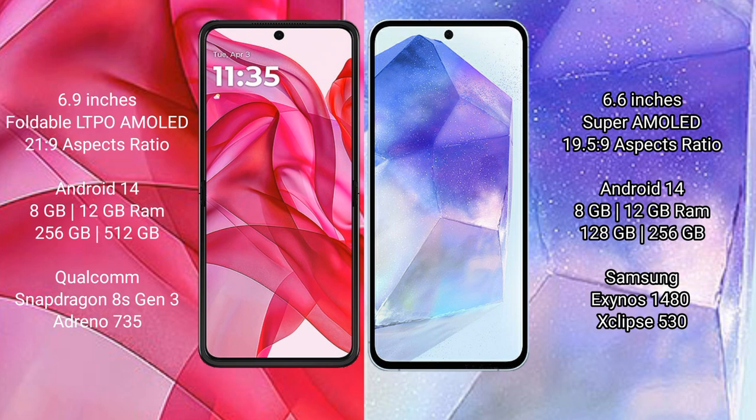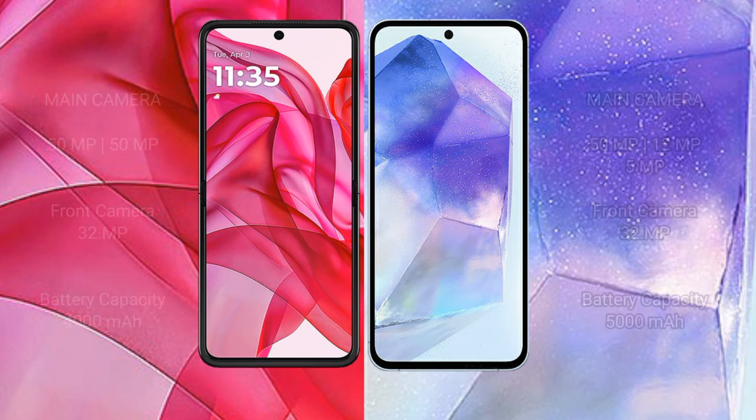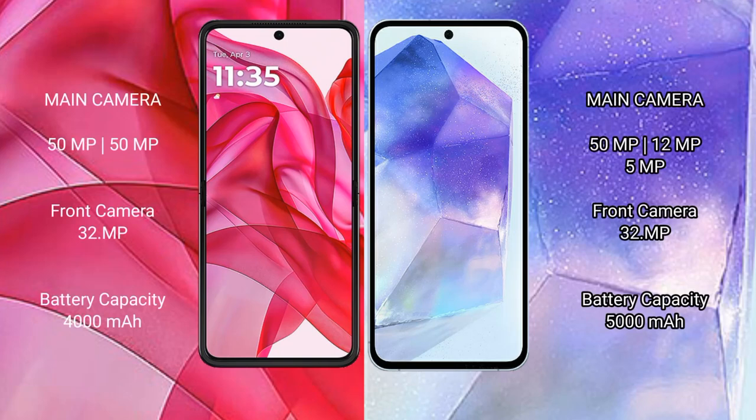The Motorola Razr 50 Ultra features a dual rear camera setup with 50-megapixel and 50-megapixel sensors, and a 32-megapixel front camera. The Samsung Galaxy A55 features a triple rear camera setup with 50-megapixel, 12-megapixel, and 5-megapixel sensors, and a 32-megapixel front camera.